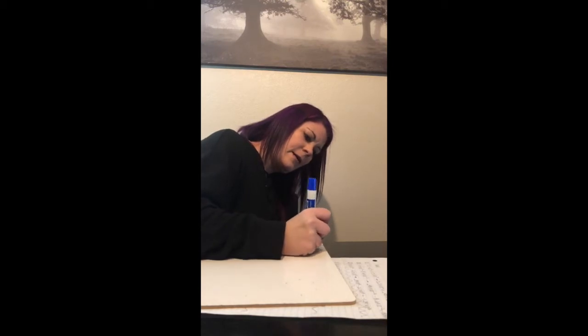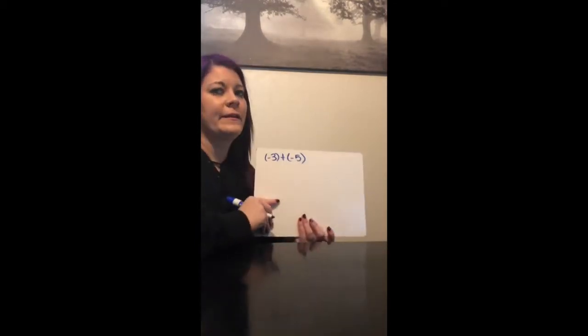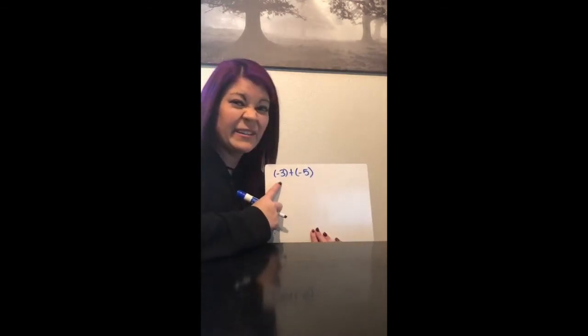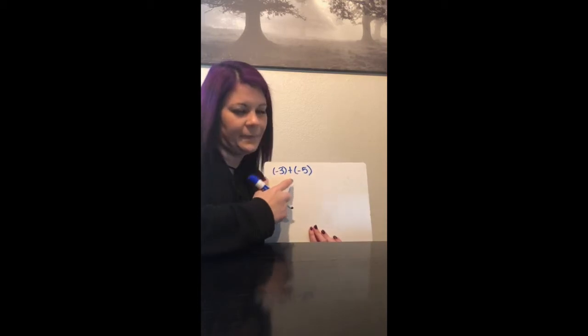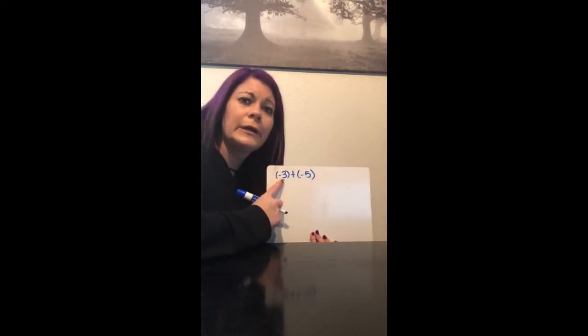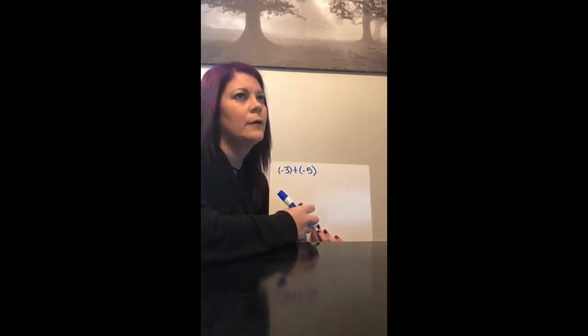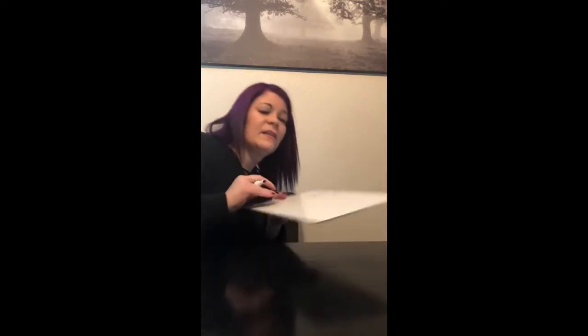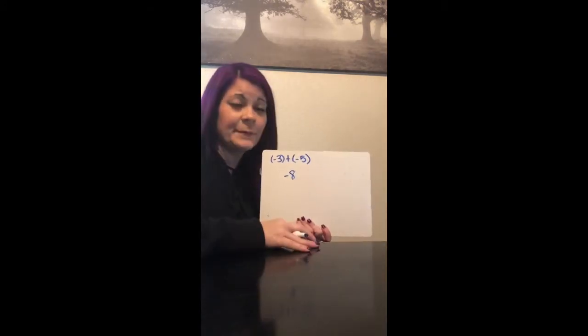With adding, if I have negative 3 plus negative 5, with integers I always think of money — everybody loves money. If it's negative, that means I owe somebody something. So here, I owe somebody $3 and I owe my mom $5. Since I owe my friend $3 and owe my mom $5, I have to come up with $8 somewhere. So I like to say I'm in the hole $8. When I'm in the hole and owe that much money, it's represented by a negative. So you simply have negative 8.